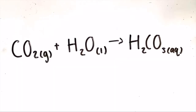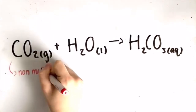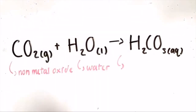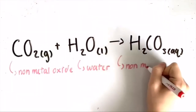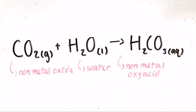Secondly, a non-metal oxide plus water yields a non-metal oxy acid. For example, carbon dioxide plus water yields carbonic acid. Carbon dioxide is our non-metal oxide, and H2O is water, and it yields carbonic acid, which is the non-metal oxy acid.